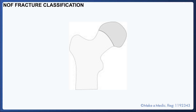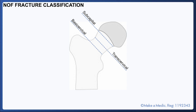Neck of femur fractures are described based on the location of the fracture. A subcapital fracture occurs at the junction between the head and neck of the femur. A transcervical fracture occurs through the neck of the femur. Basicervical fractures occur at the base of the neck of the femur, and intertrochanteric fractures occur between the trochanters. A fracture that occurs below the level of the trochanter is described as being subtrochanteric.